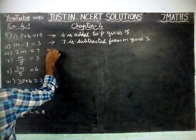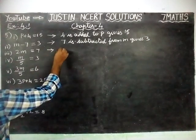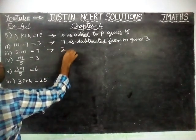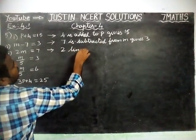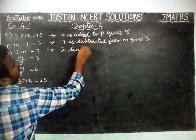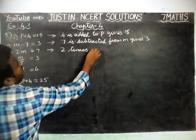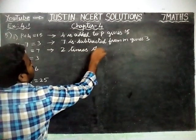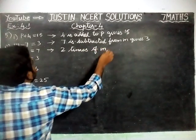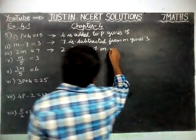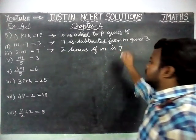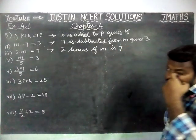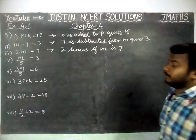Next question, 3rd one: 2 times of M is 7.